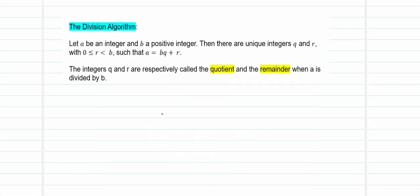Let A be an integer and B be a positive integer. Then there are going to be unique integers Q and R with the condition that 0 ≤ R < B, such that A = BQ + R. Q is referred to by the name quotient and R is referred to by the name remainder when you divide A by B.